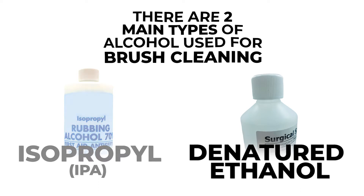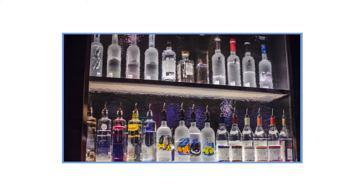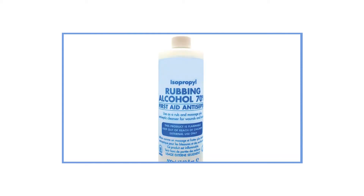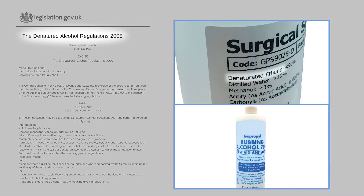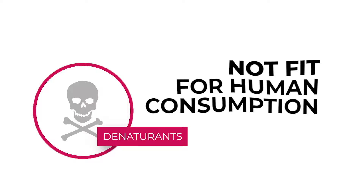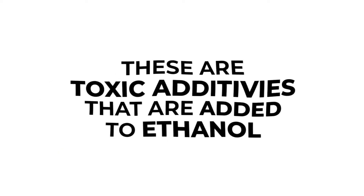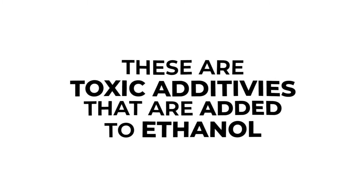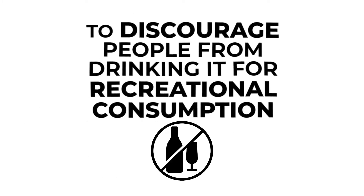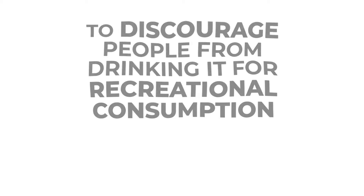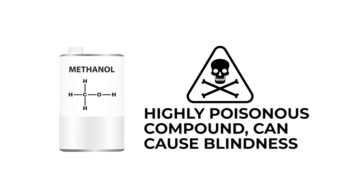Let's first look at denatured ethanol. Ethanol is the very same alcohol contained in alcoholic drinks, and is also found in surgical spirit or rubbing alcohol. By law, toxic substances called denaturants are added to ensure that it is not fit for human consumption. These are toxic additives which make it bad tasting, foul smelling or nauseating, to discourage recreational consumption. The main additive traditionally used is methanol, a highly poisonous compound that can cause blindness.